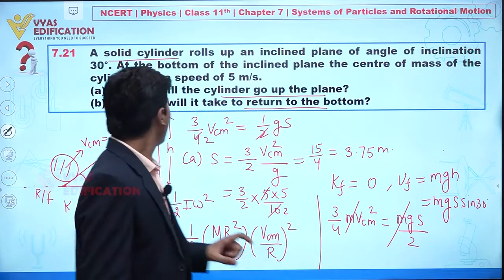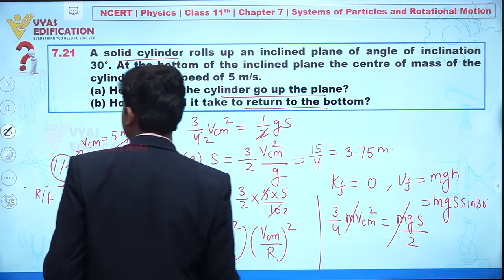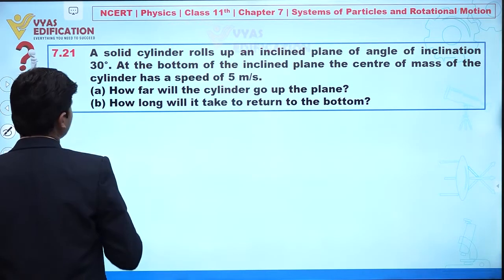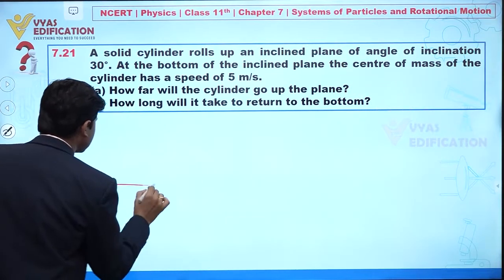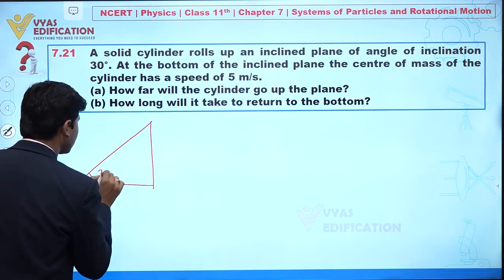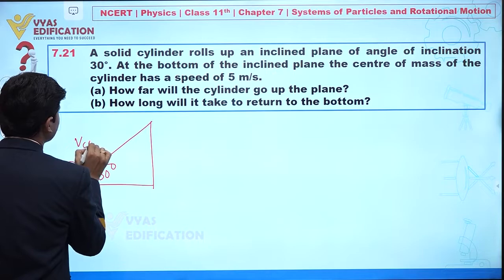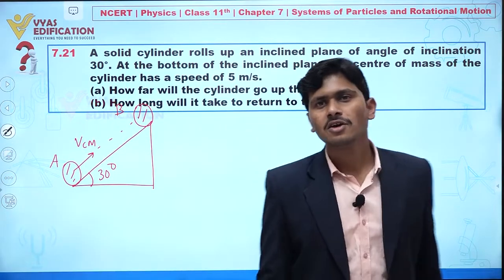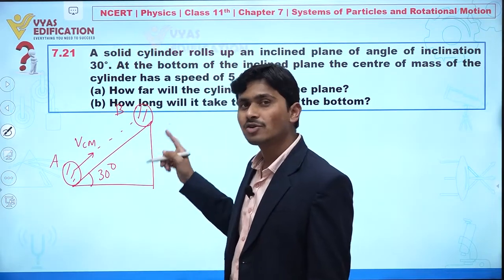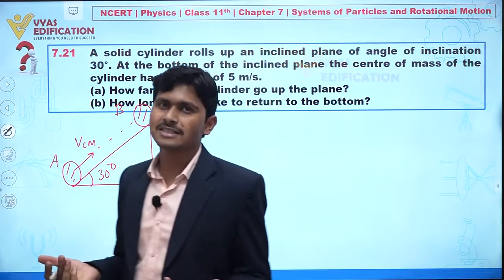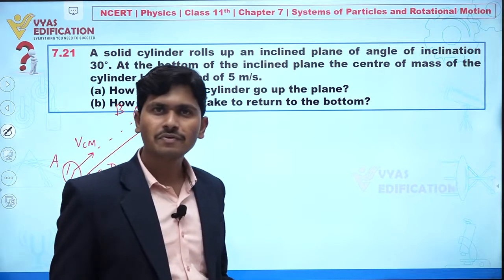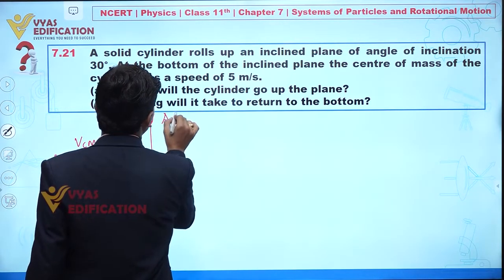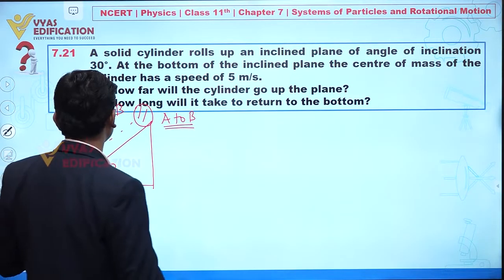For Part B, the question asks how long it will take to return to the bottom. Let's draw the inclined plane at 30 degrees again. The solid cylinder goes up to a certain distance (point B) and then returns to the starting point (point A). Since the cylinder moves under constant gravitational acceleration, we can apply equations of motion.